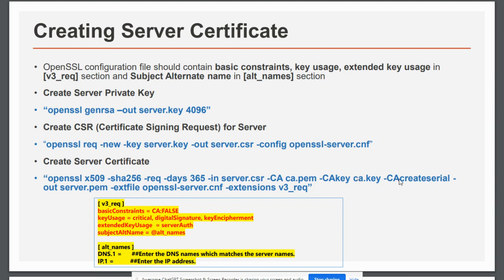The CA adds a serial number, and the output is our server certificate. We can use our own configuration file specifying subsection 'v3_req', or use the default. The important thing is that basic constraints must be set to 'CA:false' for a server certificate (unlike the CA certificate where it was true). Key usage, extended key usage, and Subject Alternative Name (SAN) must be defined per requirements.